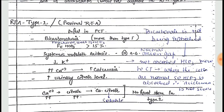In Type 2 renal tubular acidosis, the proximal convoluted tubule (PCT) is affected. The PCT is not able to absorb bicarbonate, so the fractional excretion of bicarbonate in the urine will be more than 15%. This leads to metabolic acidosis with hypokalemia. Since there is a normal anion gap, there will be hyperchloremia. Type 2 RTA is a part of Fanconi syndrome.